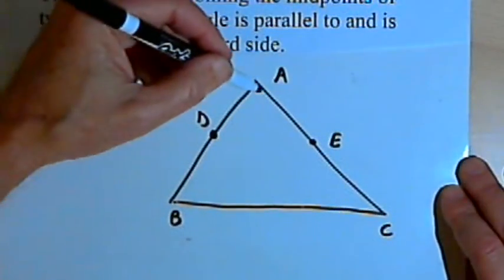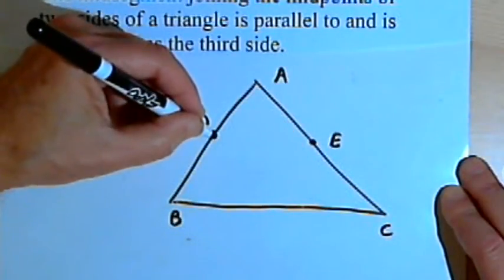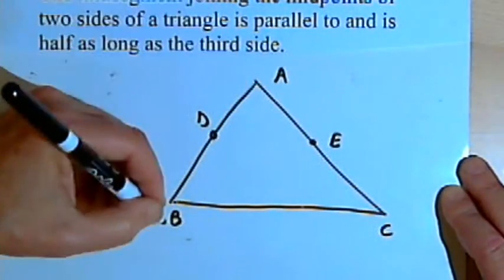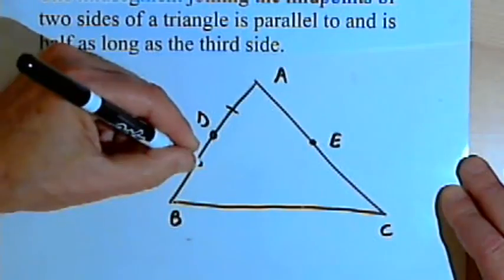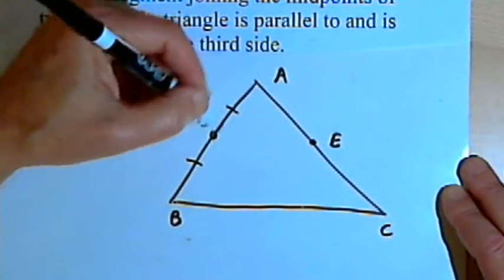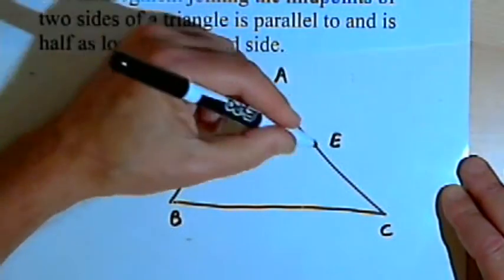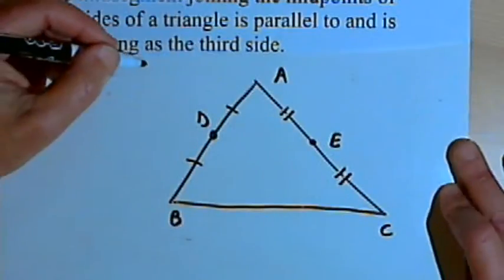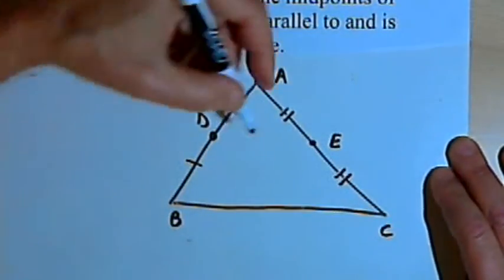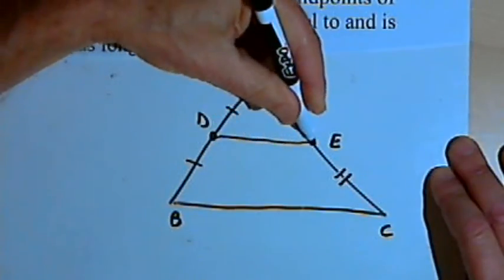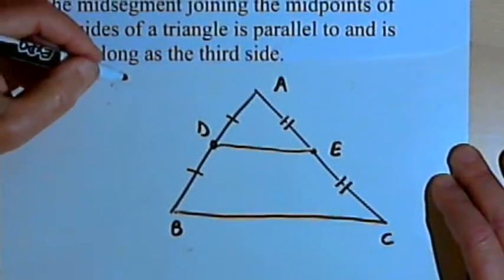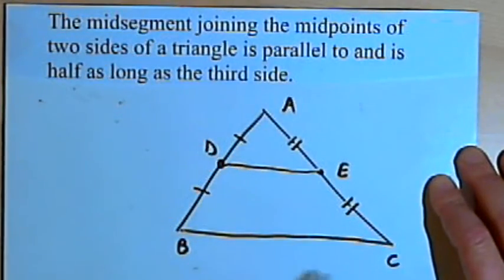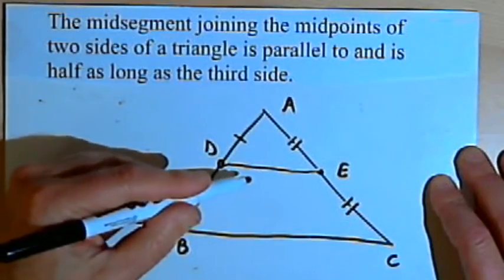I've drawn a triangle here, labeled it ABC, and I've marked two points, point D and point E. Point D is a midpoint on side AB, so it cuts AB into two segments of equal length. And point E is a midpoint on side AC, so it also divides side AC into two segments of equal length. If I connect points D and E, I have what's called a mid-segment. This theorem says that mid-segment is parallel to the third side, parallel to BC, and it's one-half as long as BC.